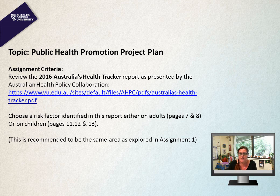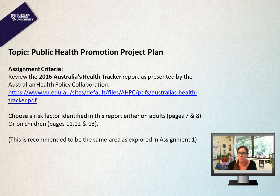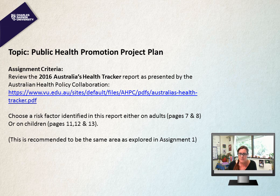Let's find out a little bit more about Assignment 2. We want you to go back to the 2016 Australia's Health Tracker Report — the same document you used for Assessment 1. You would already be familiar with one of the risk factors and a specific age group that you explored in that first assessment. We recommend you follow the same area in this assessment as what you did in Assessment 1.